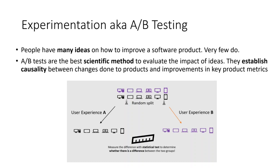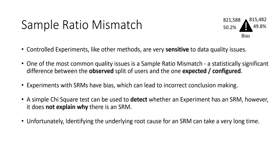Controlled experiments, however, are very sensitive to data quality issues. One of the most common ones is an SRM, a sample ratio mismatch. This indicator tells us whether our observed split of users differs from the one that was expected, or more accurately, configured in the beginning of the experiment. An experiment with an SRM has bias in the data which can lead to incorrect conclusions. A simple chi-square test can be used to detect whether an experiment has an SRM. However, it does not explain why there's an SRM.